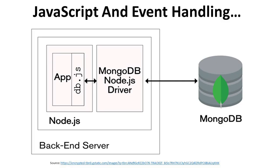Here we have a backend server example. Suppose we have a Node.js file; its application includes app and db.js, that is a database.js file. It is connected to the MongoDB Node.js driver, which sends requests to the MongoDB database. The dual arrow represents two-way communication — from the MongoDB Node.js driver to MongoDB and vice versa, ultimately providing data back to the db.js app.